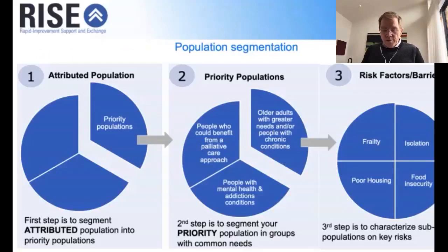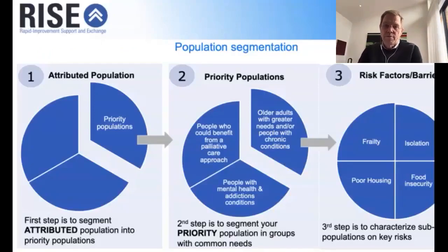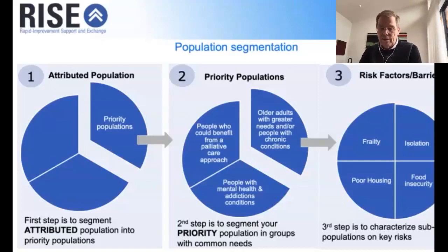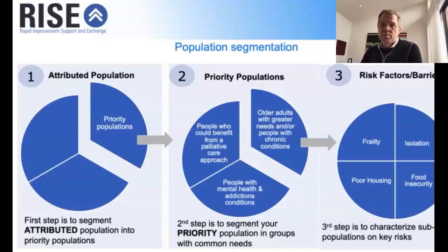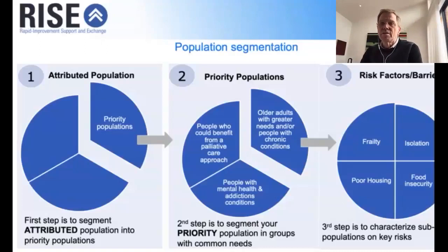You've already taken the first step and determined what your priority population will be within your attributed population for at least year one. Within your priority population — and many of you have taken large priority populations like seniors — the next step is to divide that up into groups of people with similar needs. The third step would be to characterize those people in terms of additional barriers and risk factors to determine the needs for the different groups.